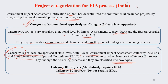Category B projects undergo the screening process and are classified into two types: Category B1 projects, which mandatorily require EIA, and Category B2 projects, for which EIA is not mandatory. Category A projects require national-level appraisal; Category B projects require state-level appraisal — with separate agencies handling each level.